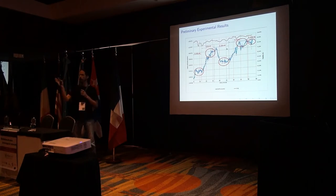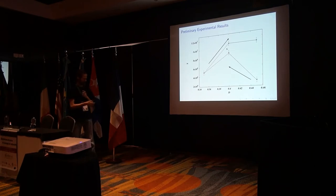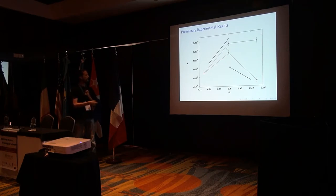Now if you put all these points in the same phase diagram we made before — x and D — that's what you find. So you start here, then you move here, then this point here is the last one, the only one that is repeated, and then when you start to increase again you get completely different points.